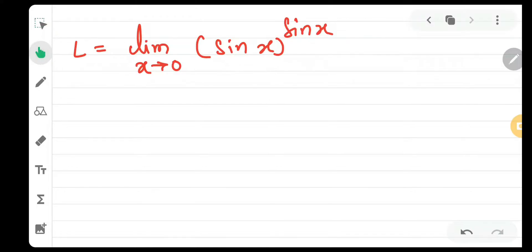The question is limit x tends to 0, sin x the whole raised to sin x. Now, if you check this out, sin of 0 raised to sin of 0 would be nothing but 0 raised to 0. Now, how to solve such kind of limits?